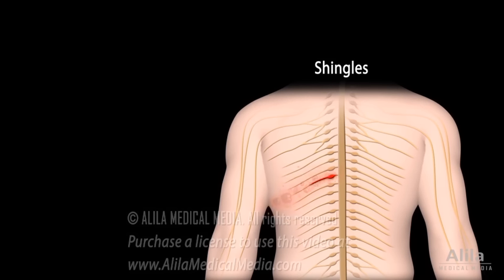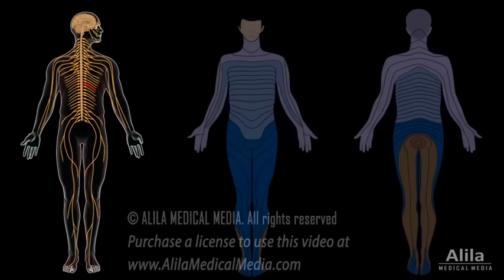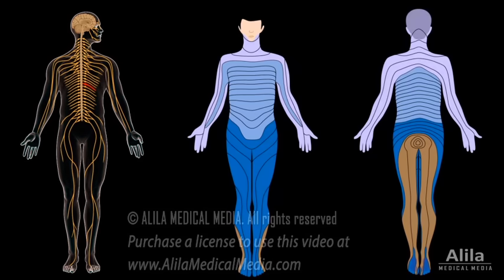The virus multiplies and spreads along the path of the infected nerve, resulting in damage and pain. The location of pain depends on the nerve that is affected. Because each spinal nerve supplies a specific area of the body called a dermatome, the patterns of pain follow the dermatome distribution. When a cranial nerve is infected, face pain results. As nerves come in pairs and usually only one is affected, the pain is typically limited to a small area on one side of the body.